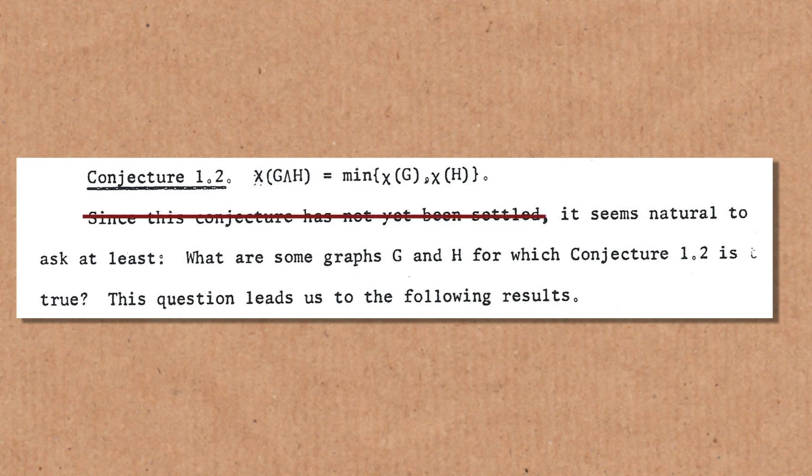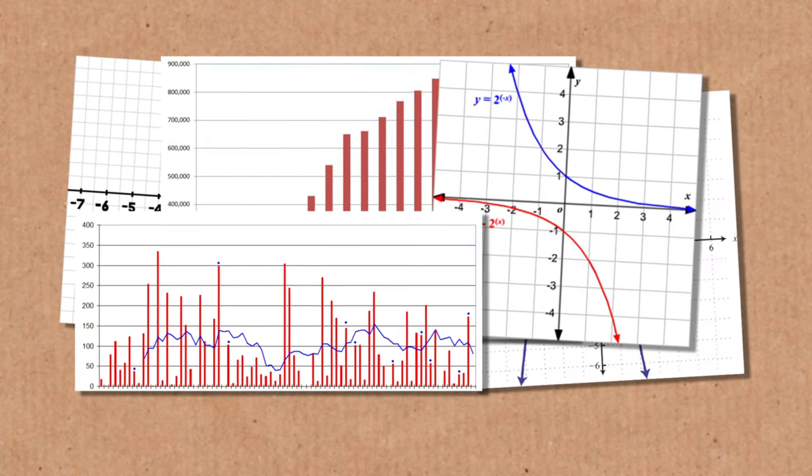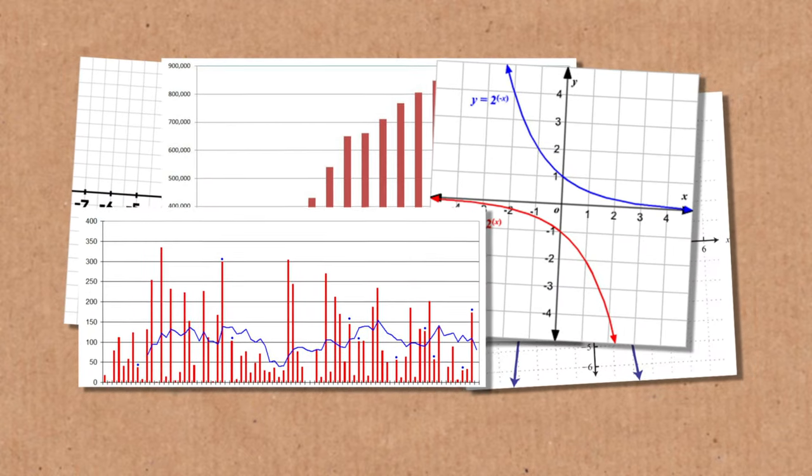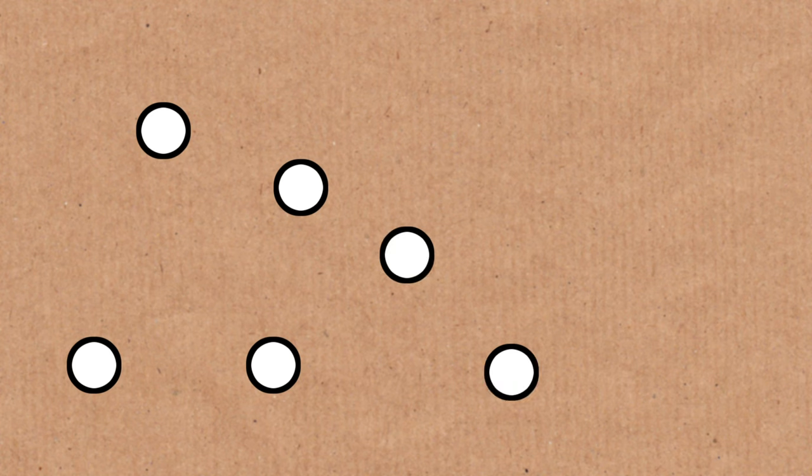So I said this is graph theory, so maybe the first thing I should say is that when I say graph, I don't mean a graph like the kind you make at school, where there's the x-axis and the y-axis and you're graphing a function or something. It's very confusing — mathematicians actually use the word graph for two different things. The kind of graph that we're going to be talking about is what, in most other areas of science, is called a network. It's just a collection of nodes or vertices that are connected by edges.